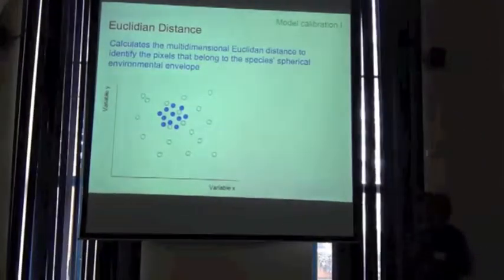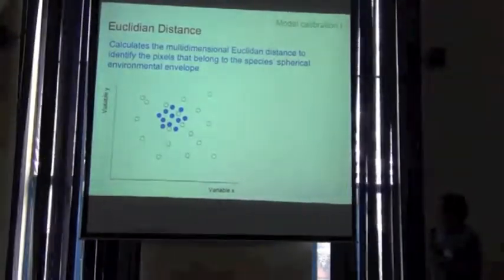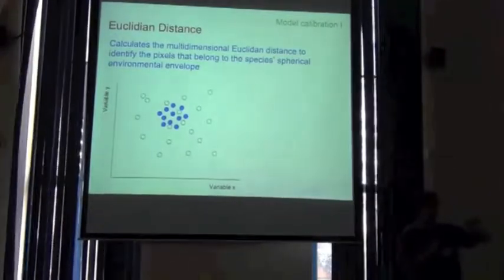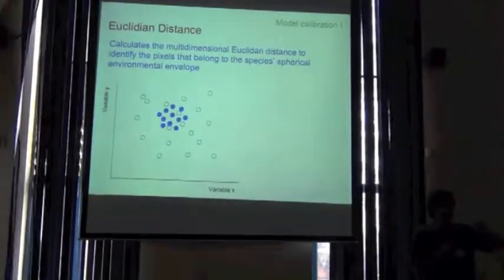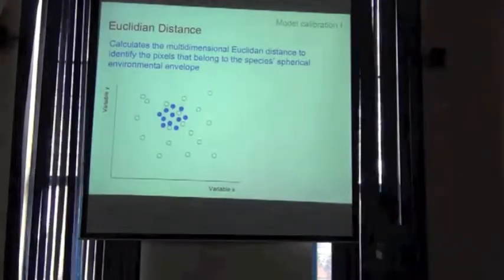For example, this is the Euclidean distance in which it calculates the distance. You've got your group of calibrated points in environmental space.